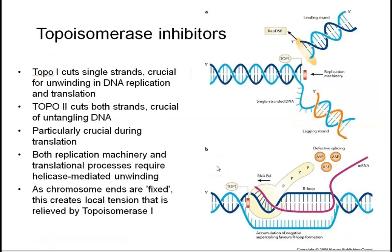The next major group are the topoisomerase inhibitors, which include agents such as doxorubicin. Topoisomerase cuts one strand of double-stranded DNA to allow DNA to pivot around the axis of a single phosphodiester bond, relieving tension as DNA is unwound by helicase. Since both replication and transcription require helicase-mediated unwinding, both processes are inhibited by topoisomerase inhibitors — which is why agents such as doxorubicin can prevent both DNA replication and affect transcription.